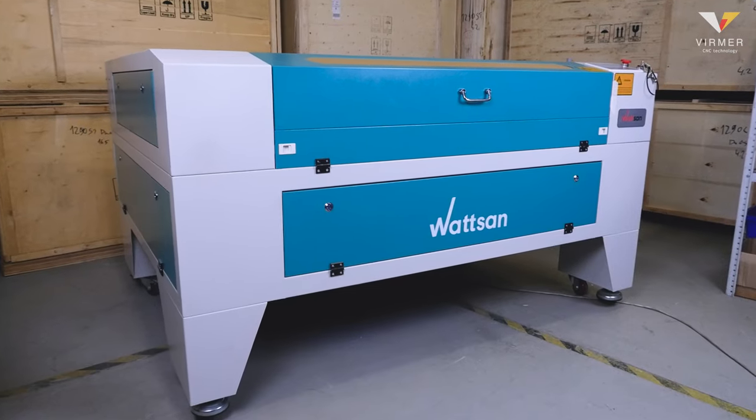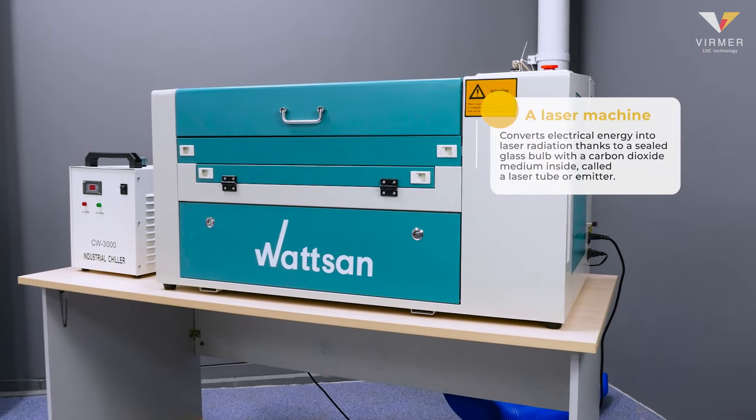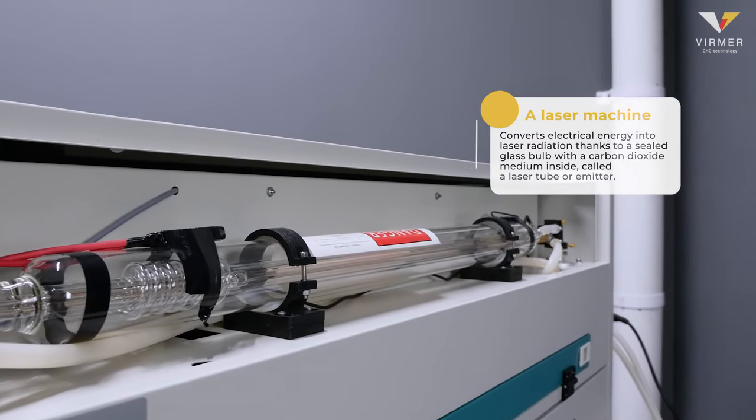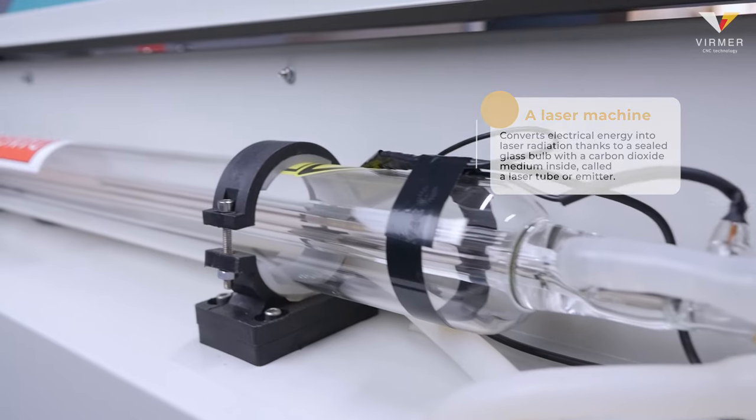That is why such machines are called CO2. A laser machine converts electrical energy into laser radiation, thanks to a sealed glass bulb with a carbon dioxide medium inside, called a laser tube or emitter.